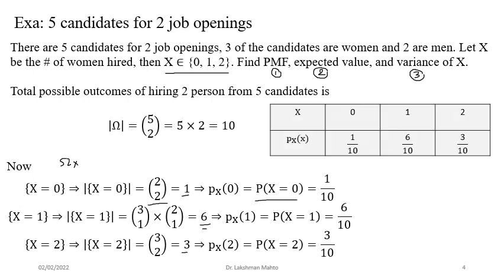Now that we have the probability mass function in tabular form, we compute the expectation. Expectation is a weighted average — we multiply each possible value of X by its corresponding probability and sum them. This weighted sum, where the weight is provided by the corresponding probability, gives us E[X] = 12/10.